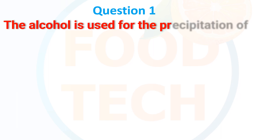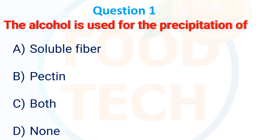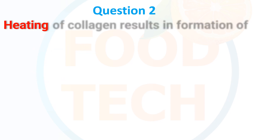The alcohol is used for precipitation of: A. Soluble fiber, B. Pectin, C. Both, D. None. The answer is B. Pectin.